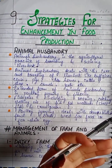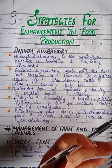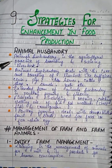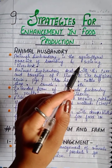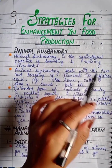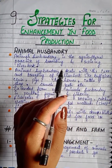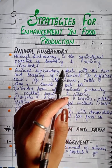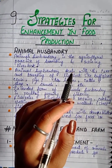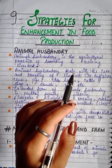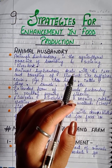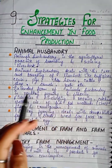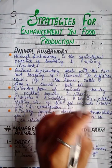First is animal husbandry. Animal husbandry is an agricultural practice for breeding and raising livestock. In animal husbandry we breed our livestock like animals on the farm — cow, pig, horse, etc. — and the number can increase.